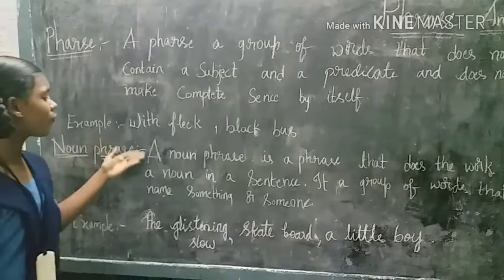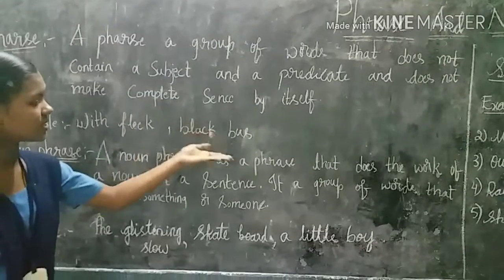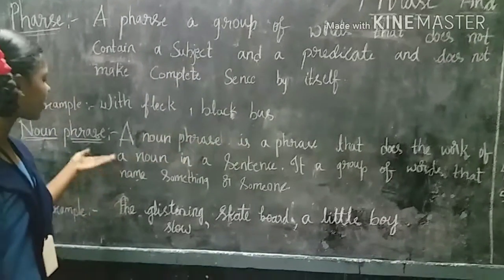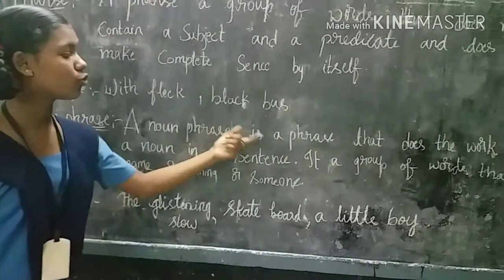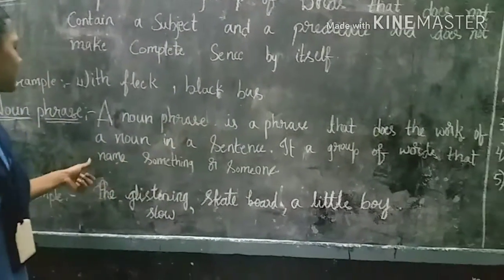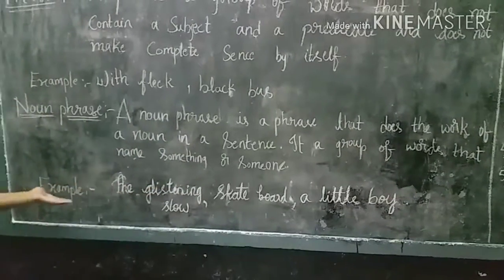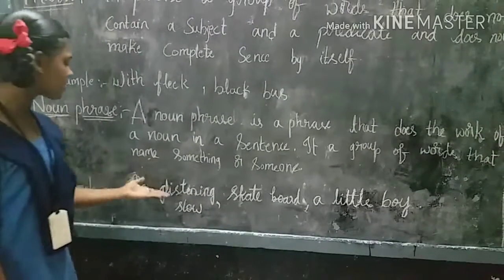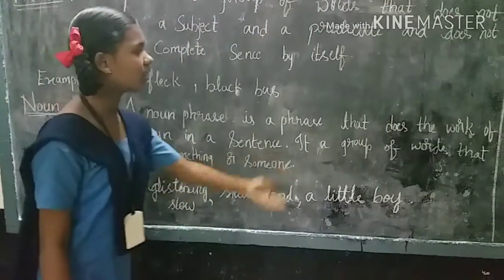Noun phrase. A noun phrase is a phrase that does the work of a noun in a sentence. It is a group of words that name something or someone. Example: the glist and slow, skateboard, a little boy.